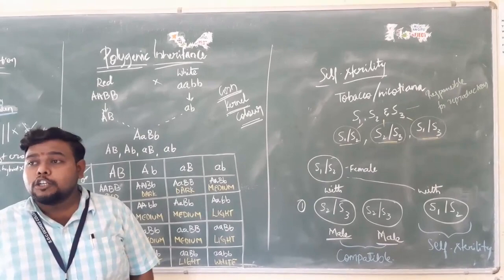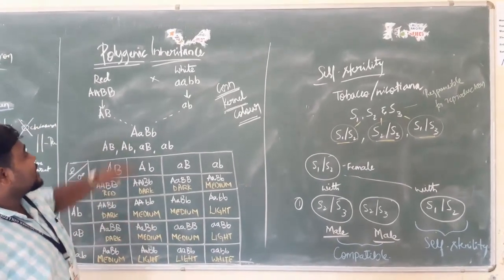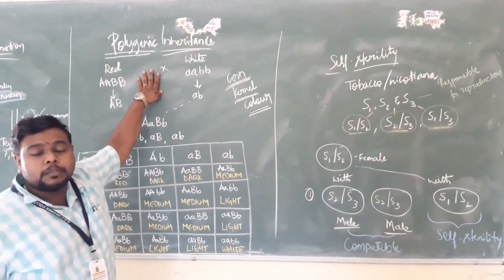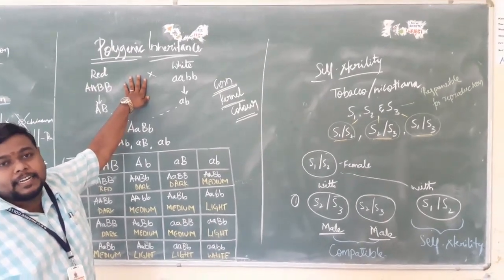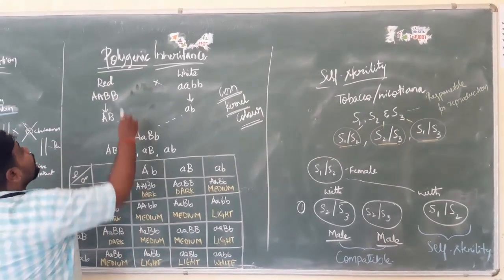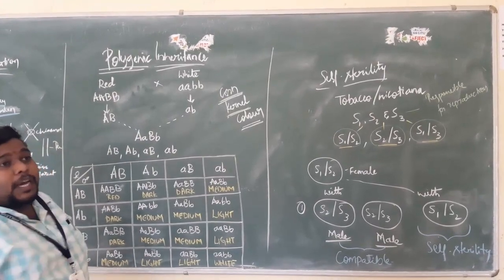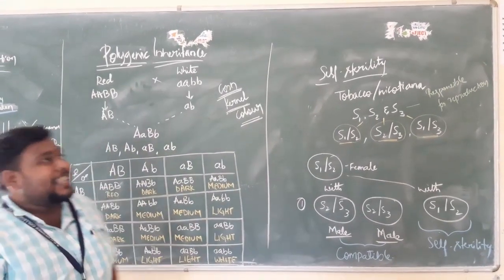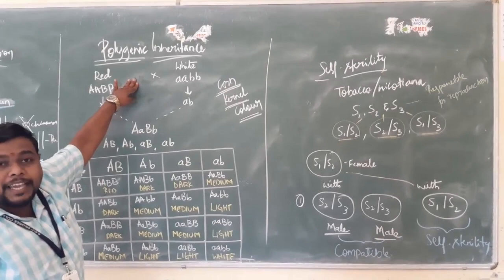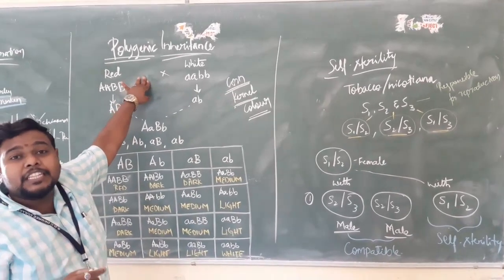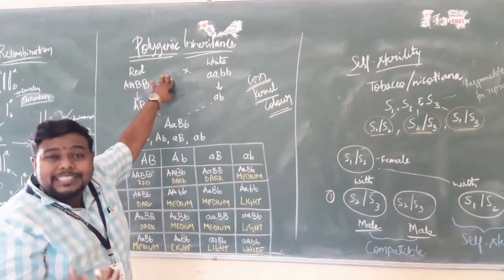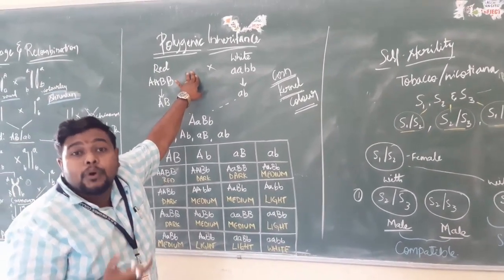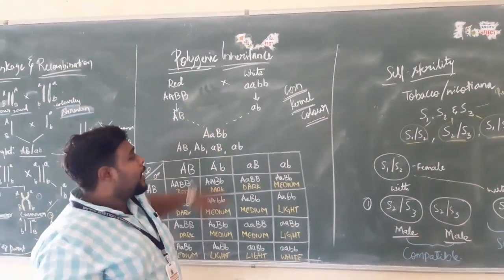The second concept is polygenic inheritance. As the name says, poly refers to many, genic means genes. So here, one single character will be controlled by more than one set of genes. For example, the color of a person — one will be very fair in color, one will be medium in color, one will be dark in color. These three are the different colors of a human being.